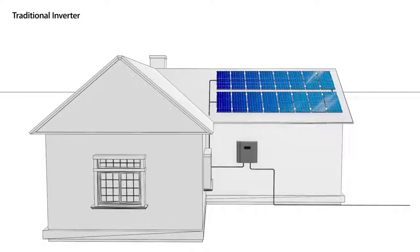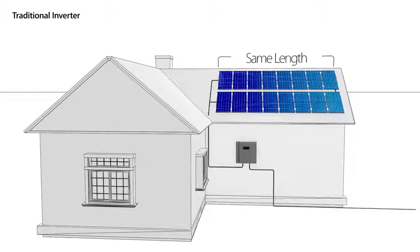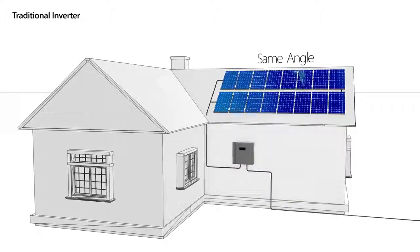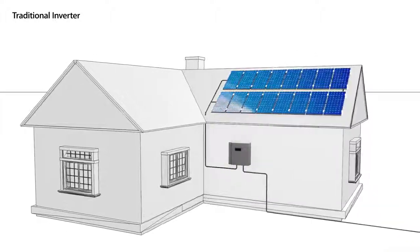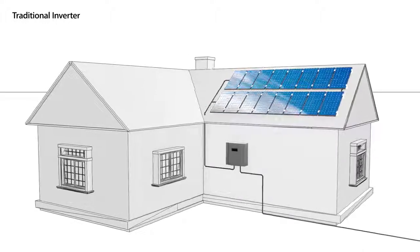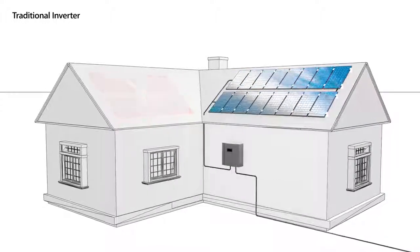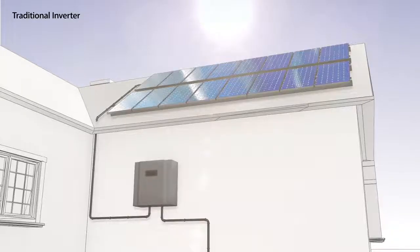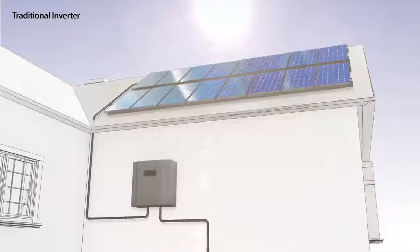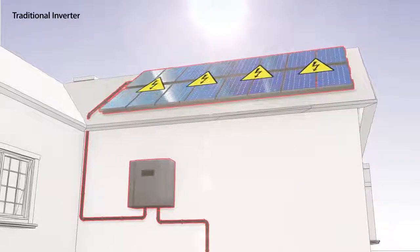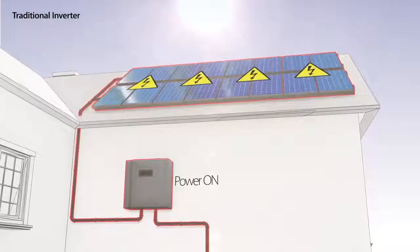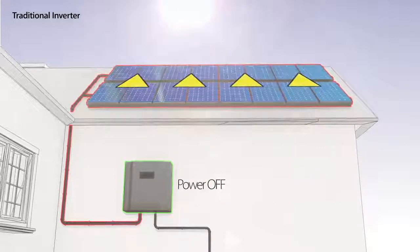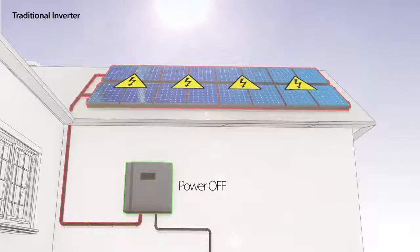The traditional system design requires all strings to be at the same length, using the same type of panels, and to be positioned at the same angle towards the sun. Real-life installation constraints result in either wasted roof space or unnecessary duplication of system components. The DC cables, which connect the panels to a string, carry high voltage as long as the sun is shining. The traditional inverter cannot shut down the panel's DC voltage, and therefore poses serious risks to installers and firefighters.